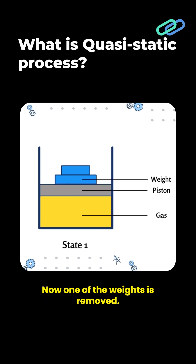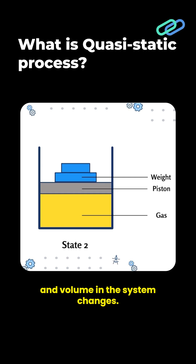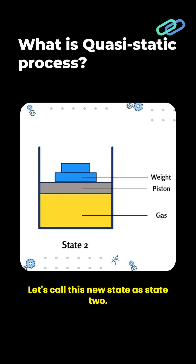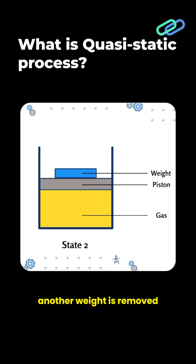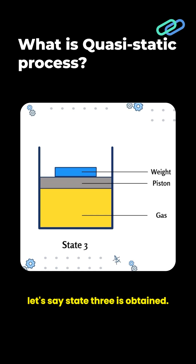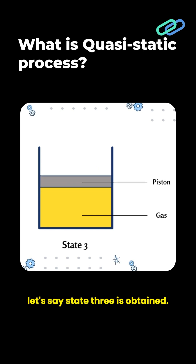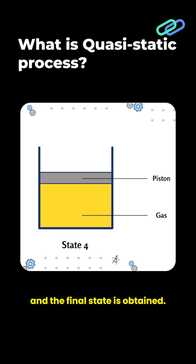Now, one of the weights is removed. Because of this, the pressure and volume in the system changes. Let's call this new state as state 2. Similarly, another weight is removed and the new state, let's say state 3, is obtained. Finally, the last weight is removed and the final state is obtained.